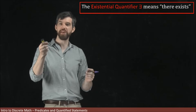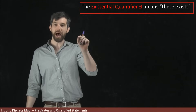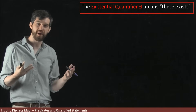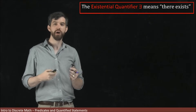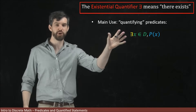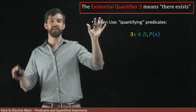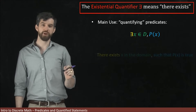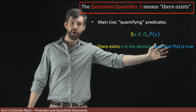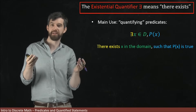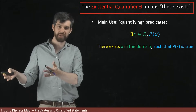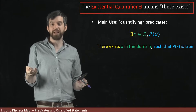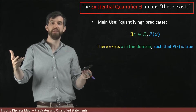We have another related shorthand called the existential quantifier. It is a backwards E and means 'there exists.' Like the universal quantifier, the existential quantifier's main purpose is to quantify a predicate. The backwards E means 'there exists something in the domain' — there exists an input value where the predicate is true. In other words, there exists an X in the domain such that the predicate is true. If I have a predicate and a domain, one possibility is every single input resulting in the predicate becoming true, and another is no input making it true.